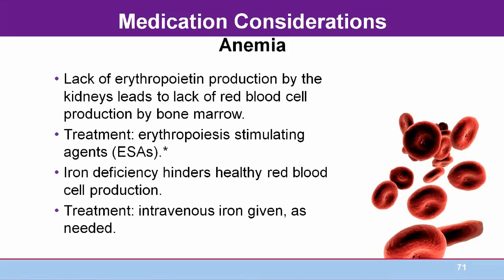Nearly all dialysis patients will become iron deficient from frequent phlebotomy, GI losses, and for hemodialysis patients, the hemodialysis treatment itself. ESAs are much less effective if iron is not available to make hemoglobin, so iron supplementation is often given along with ESA therapy. Common IV iron preparations include iron sucrose and iron ferric gluconate. KDOQI recommends that hemoglobin and iron levels be analyzed together when deciding on ESA therapy.